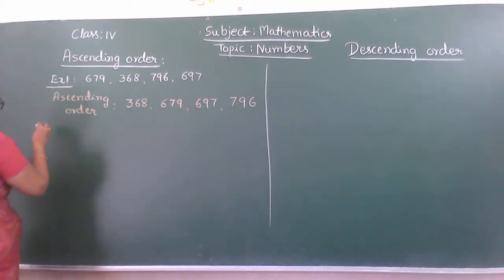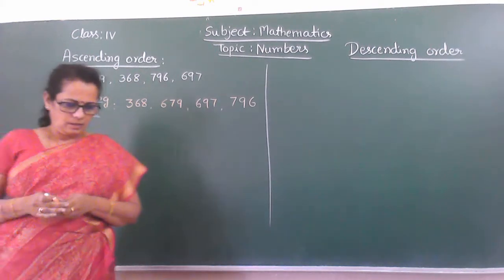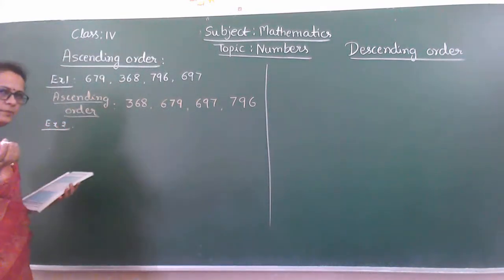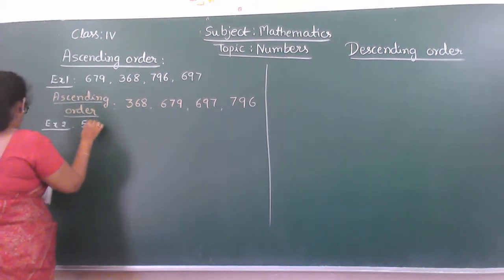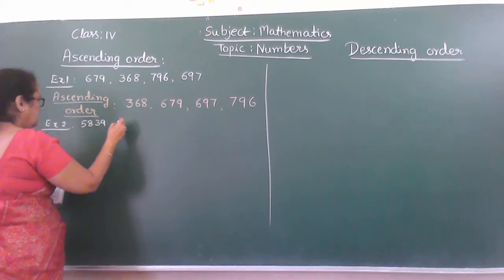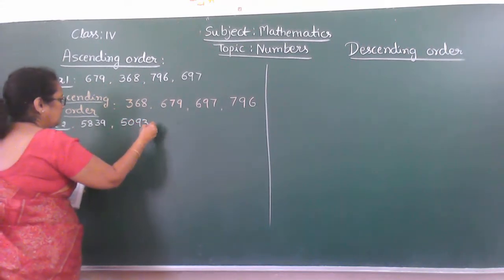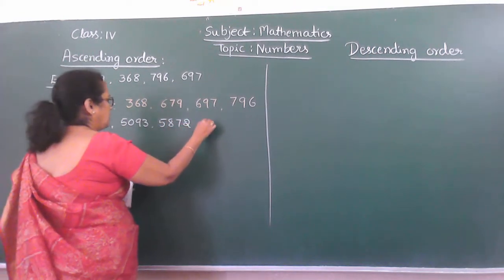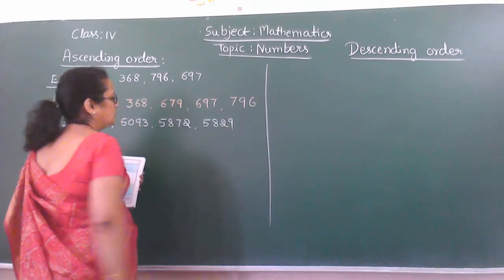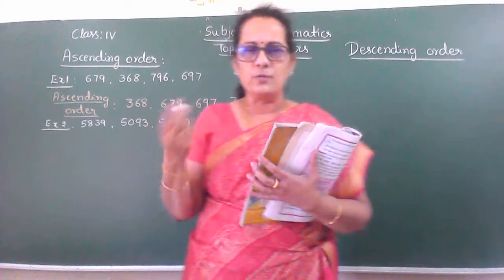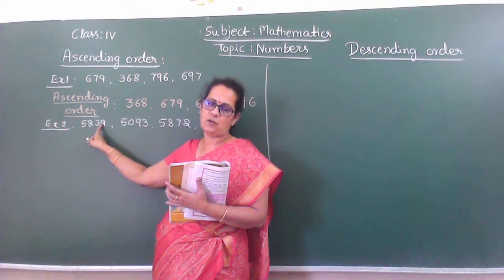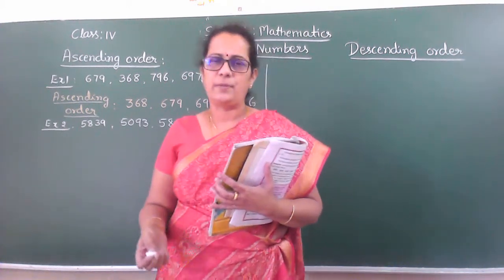So I will write another example sum. Example 2. Today we have 4-digit numbers. For example: 5,839; 5,093; 5,872; 5,829. See, children, while writing, you pronounce it properly according to place value.